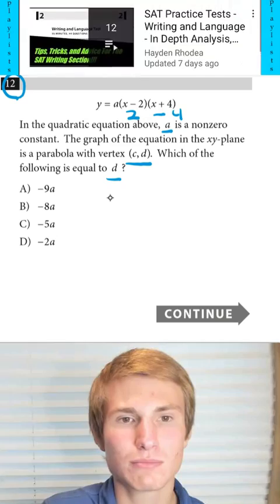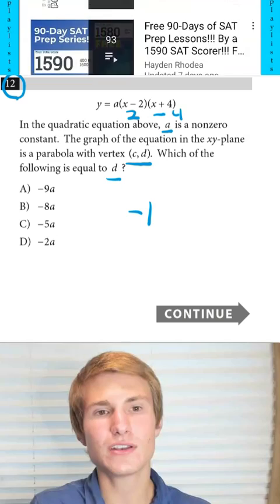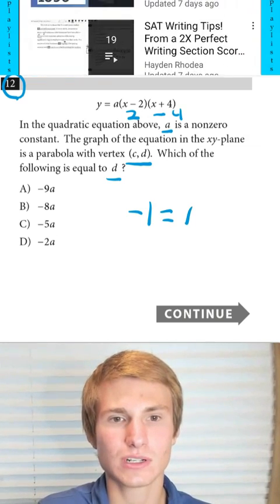Now I find the midpoint between those two. The midpoint between negative 4 and 2 will be at negative 1. So now that I know that negative 1 is going to equal my x-coordinate of my vertex,